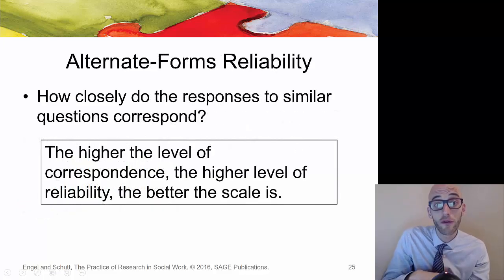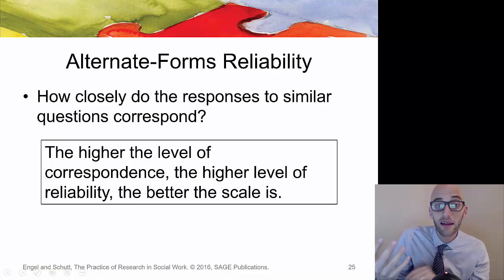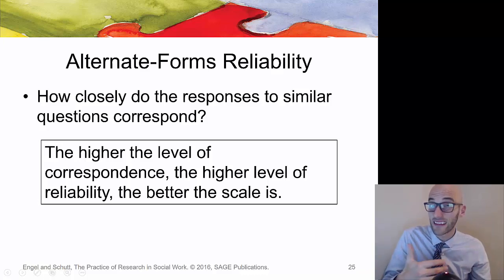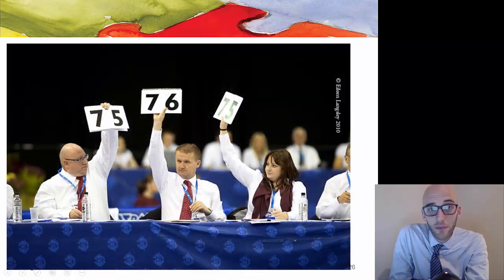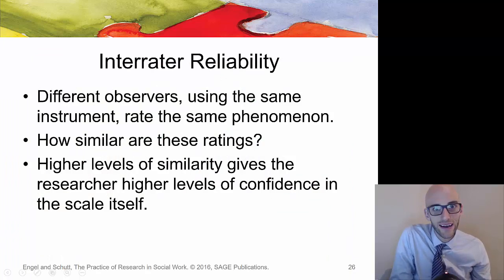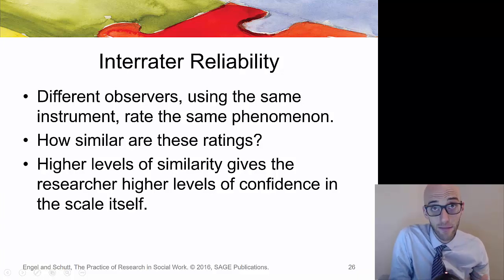Alternate form reliability examines how closely responses to similar questions correspond to each other — the higher the correspondence, the higher the reliability. Think of a Wechsler intelligence test versus a Stanford-Binet: both forms of intelligence measures should give pretty similar results. For inter-rater reliability, think of the Olympics: multiple raters of the same performance should be closely related — you wouldn't expect one judge to give a 9 or 10 while another gives a 1 or 2. Similarly, two psychologists administering an intelligence test to the same person should come up with a pretty similar score.